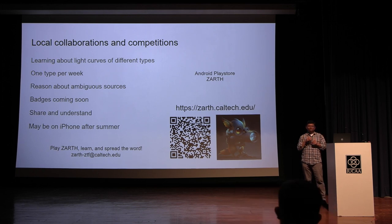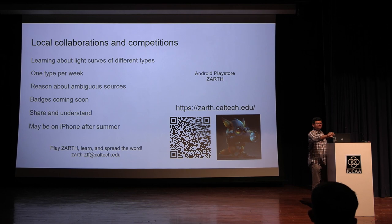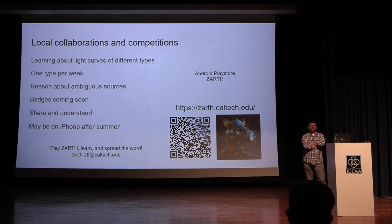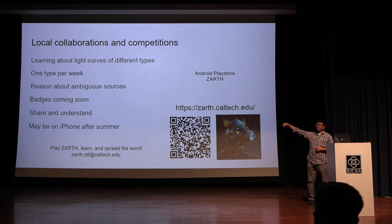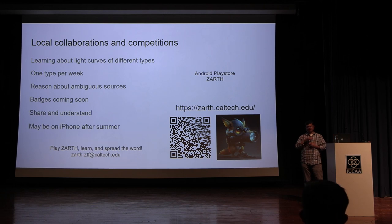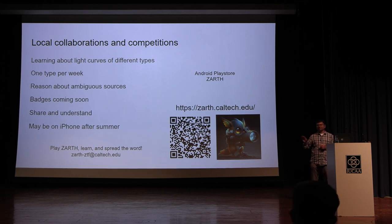Q: This is Jay — my question is about citizen science projects. A: When we started thinking about ZARTH we did want to make it a citizen science project, where people could not only catch transients but contribute — reasoning about ambiguous sources, for instance. That should hopefully be coming. Within ZTF we do have a couple of things through Zooniverse, and eventually ZARTH will open up for other surveys. Right now we don't have citizen science enabled, but you can organize activities among yourselves.